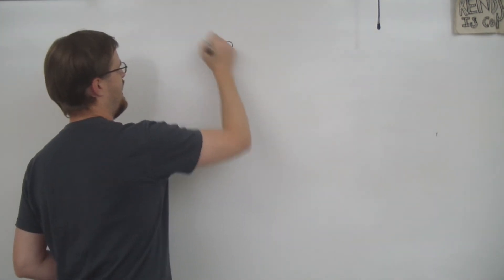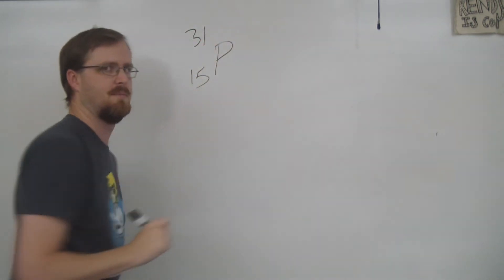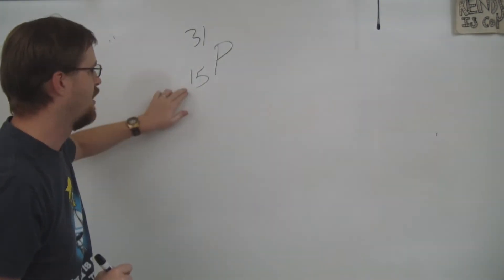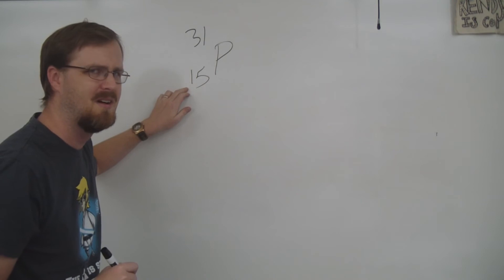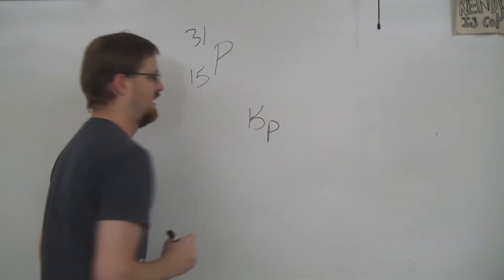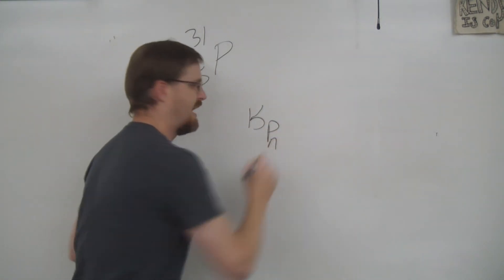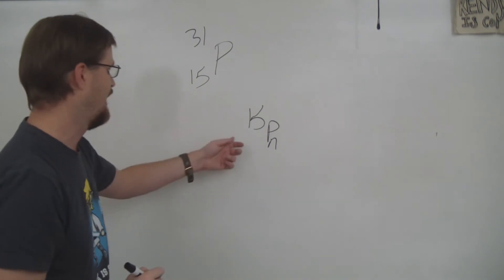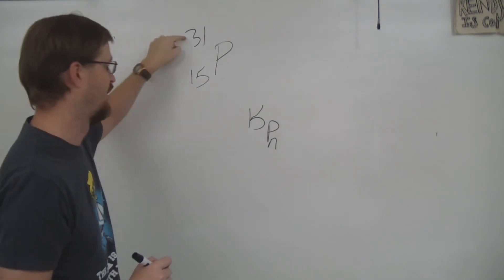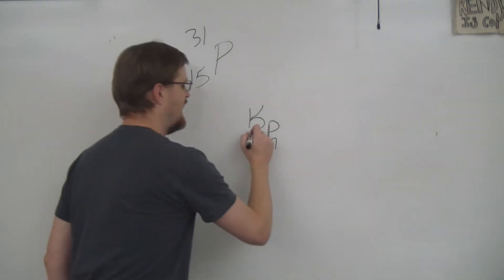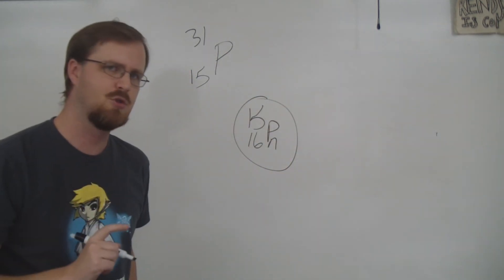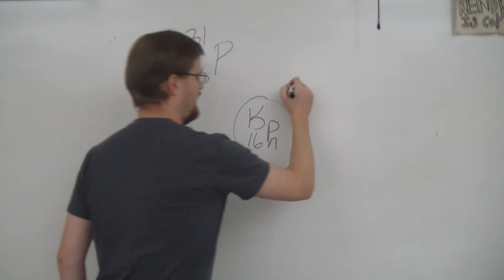Think about it. This is the mass number over the atomic number. The atomic number is the number of protons, so we have 15 protons. We also need the number of neutrons, and we can find that because it's the mass number minus the atomic number: 31 minus 15 is 16. So we now have our nucleus.